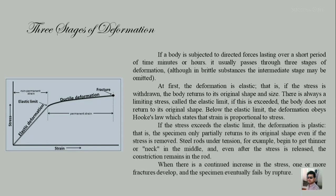If you cross the elastic limit, there will be plastic deformation — the specimen only partially returns to its original shape even if the stress is removed. For example, a steel rod under tension begins to get thinner or neck in the middle, and even after the stress is released the change remains in the rod. If stress increases further beyond the elastic limit, the deformation is considered ductile or plastic deformation. A heated iron rod that retains its extended shape after stress is removed is an example of plastic deformation.